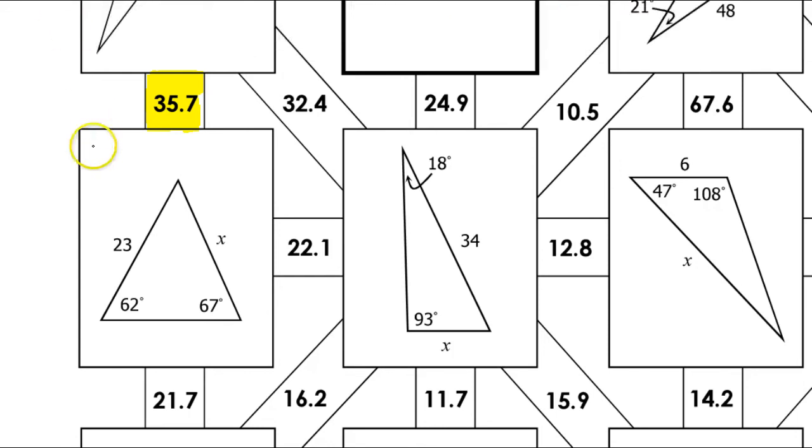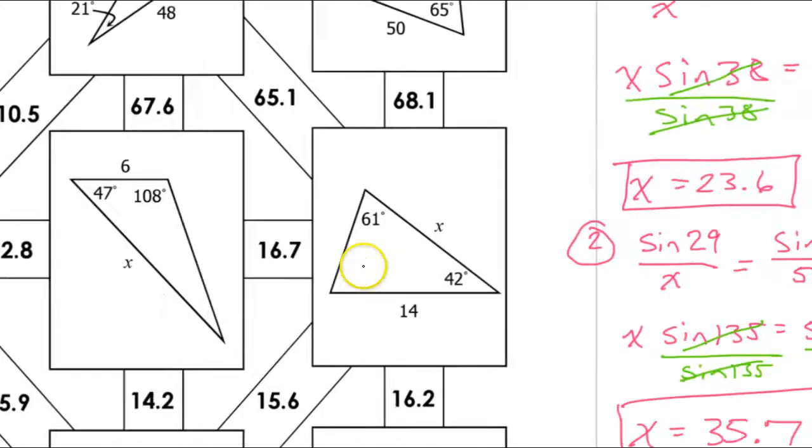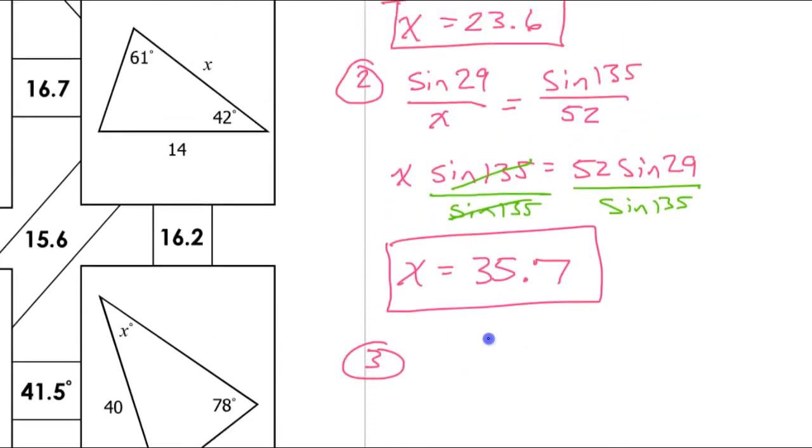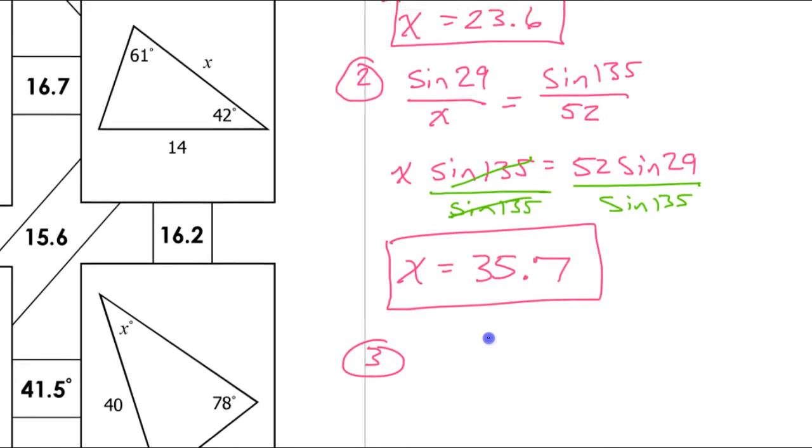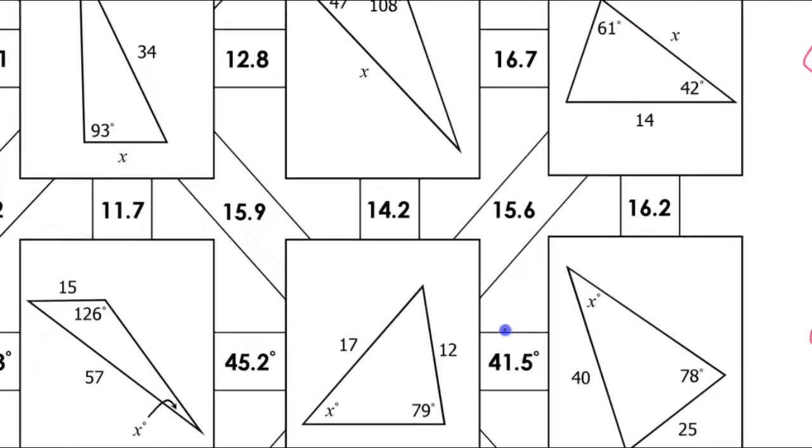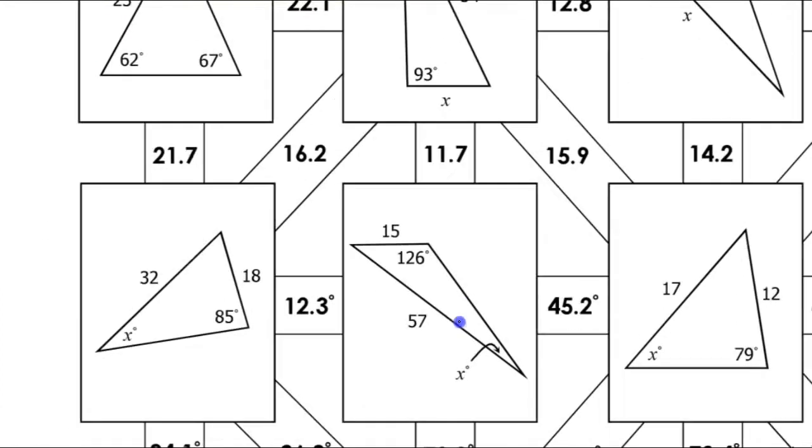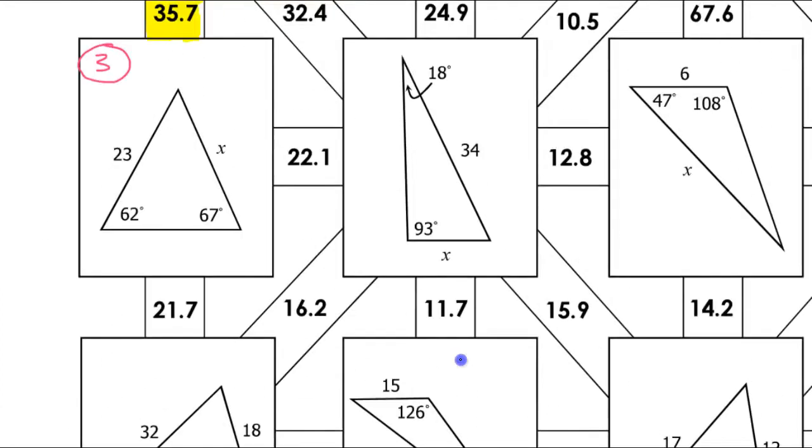But of course, we would then call this problem number three. And I would come over here to show my work. And I would put problem number three. And I would show my work and keep going. So that's how you do this. And that is how you use the law of sines to find a missing side. And it would work exactly the same way if I needed to find a missing angle.